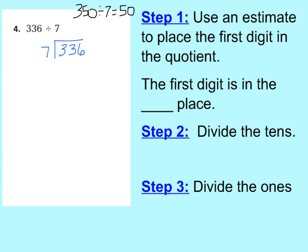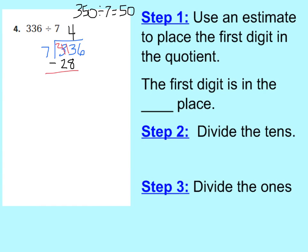If I have 33 long pieces and I want to put them into 7 different groups, I know I can have 4 in each group, because 4 times 7 is 28. So I will be using up 28 of those tens pieces. I couldn't put 5 up here, because that would be 35 — since 5 times 7 is 35 — and we only have 33 to deal with. Our answer needs to be below 50. So I put 4 in each group, using up 28 of my tens pieces. Now subtract: 33 minus 28 is 5. I have 5 tens left over.